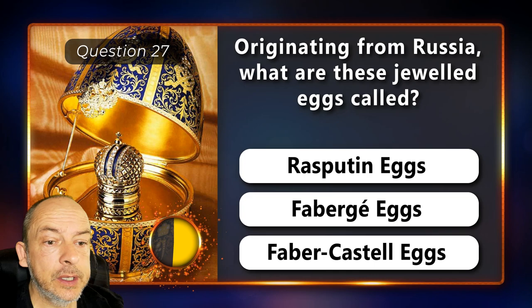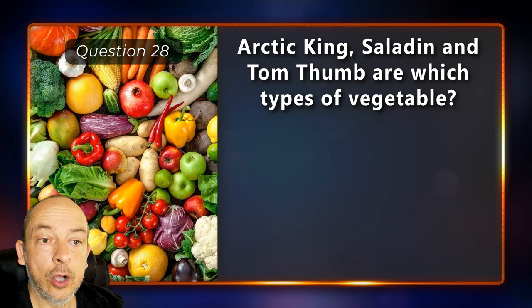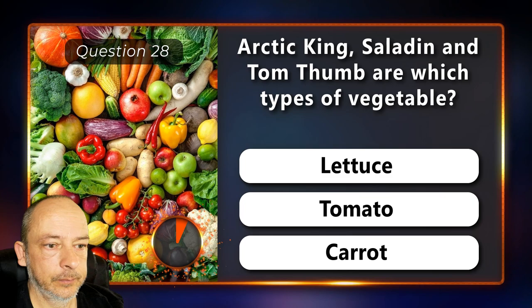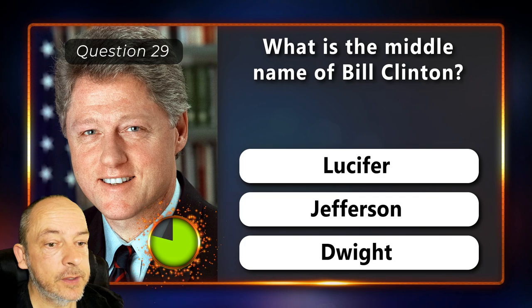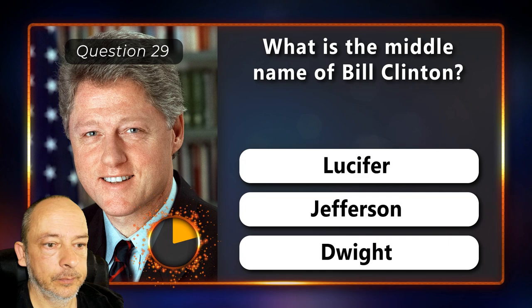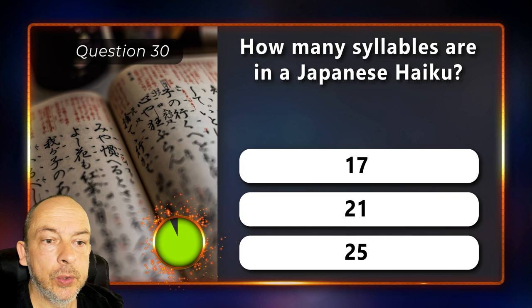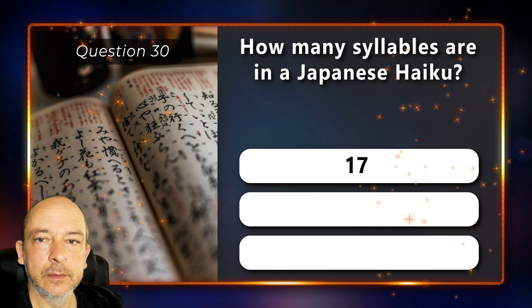Question 27: Originating from Russia, what are these jeweled eggs called? Rasputin eggs, Fabergé eggs or Faber-Castell eggs? Fabergé eggs. Question 28: Arctic King, Saladin and Tom Thumb are which types of vegetable? Lettuce, tomato or carrot? The answer is lettuce. Question 29: What is the middle name of Bill Clinton? Is it Lucifer, Jefferson or Dwight? Jefferson. Question 30: How many syllables are there in a Japanese haiku? 17, 21 or 25? 17.